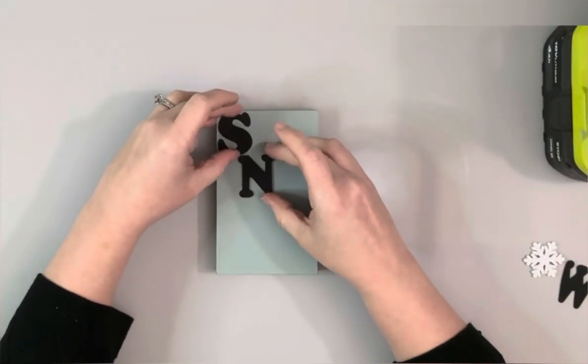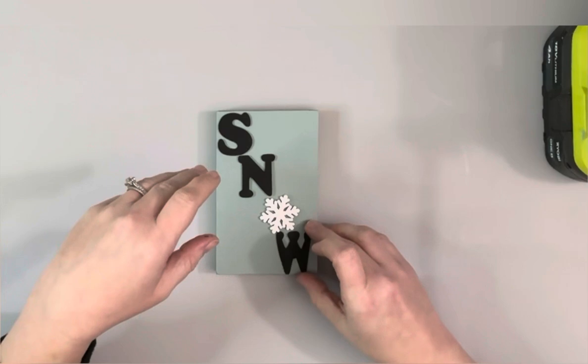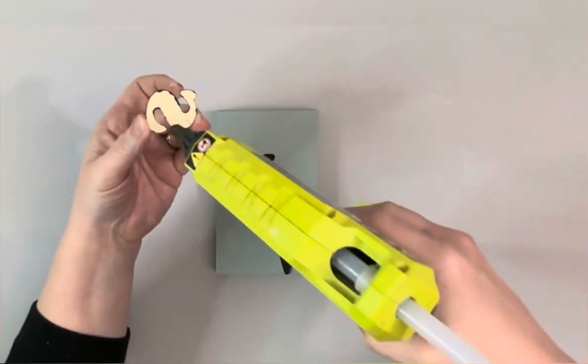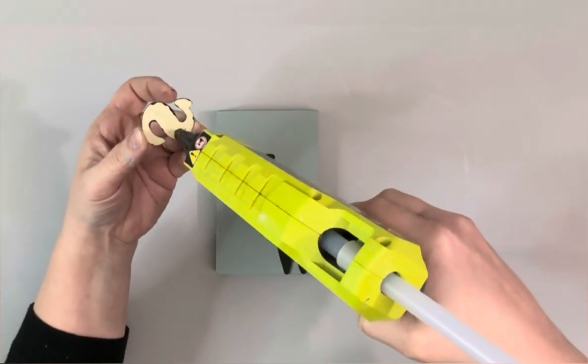Once they were dry, I placed them diagonally down the piece of wood, just trying to get them all even before hot gluing them down.